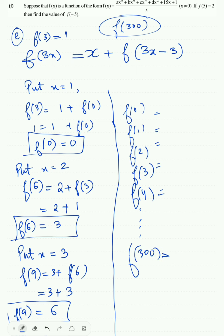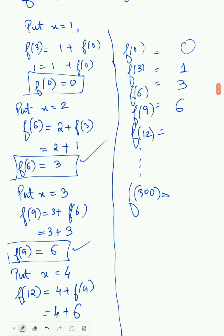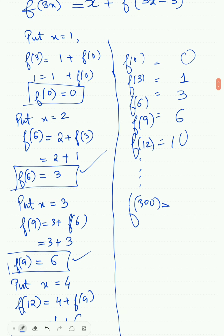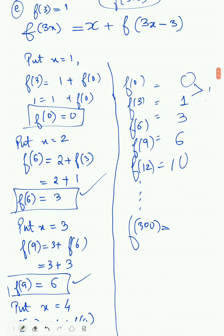So we have f(0)=0, f(3)=1, f(6)=3, f(9)=6, f(12)=10 at multiples of 3. We can see here the differences are 1, then 2, then 3, then 4.